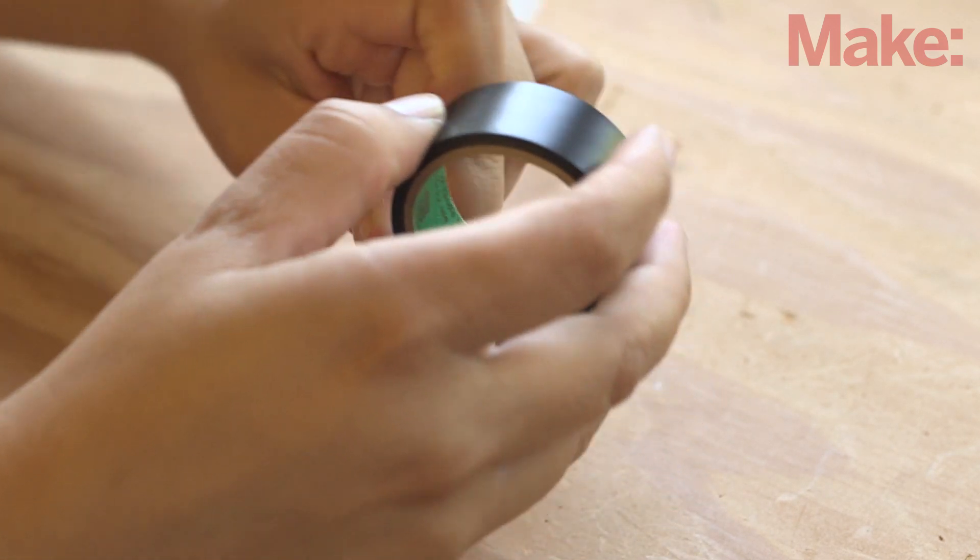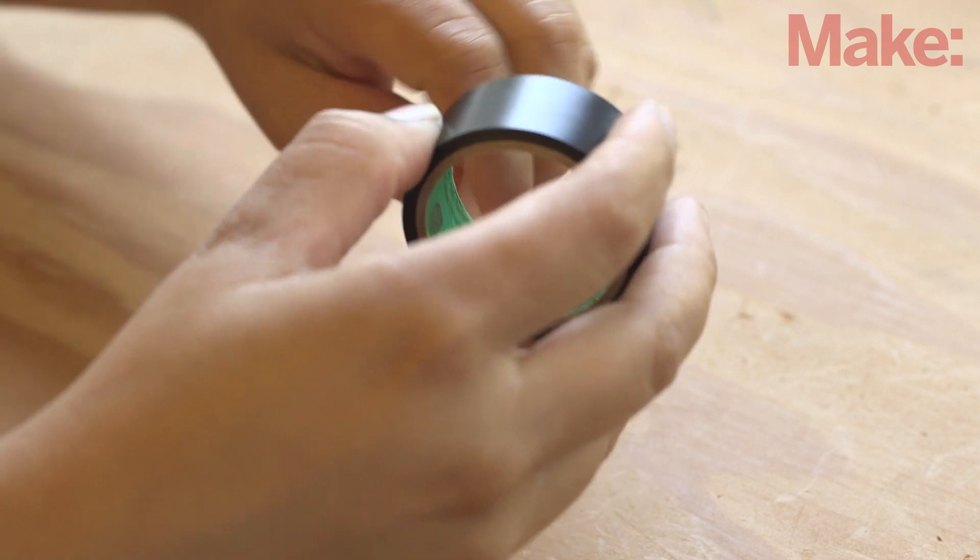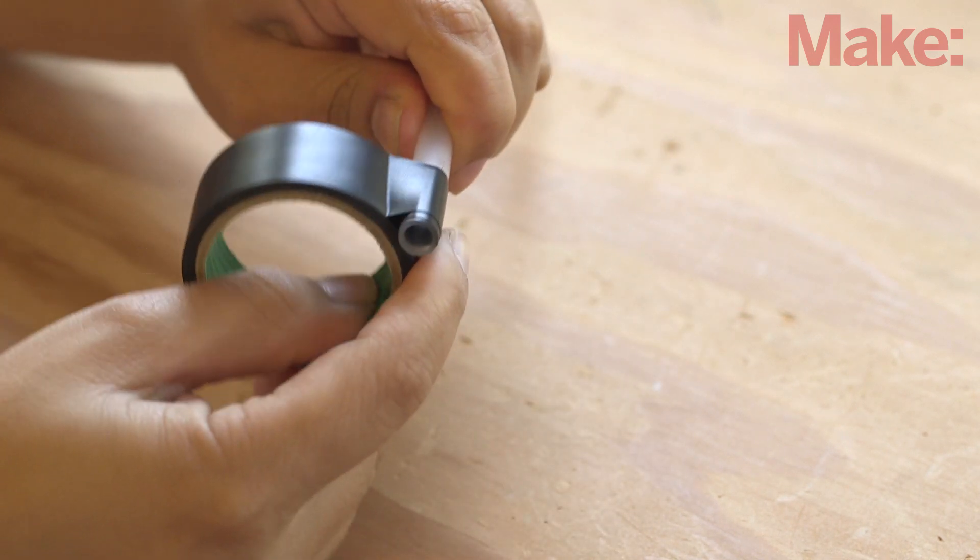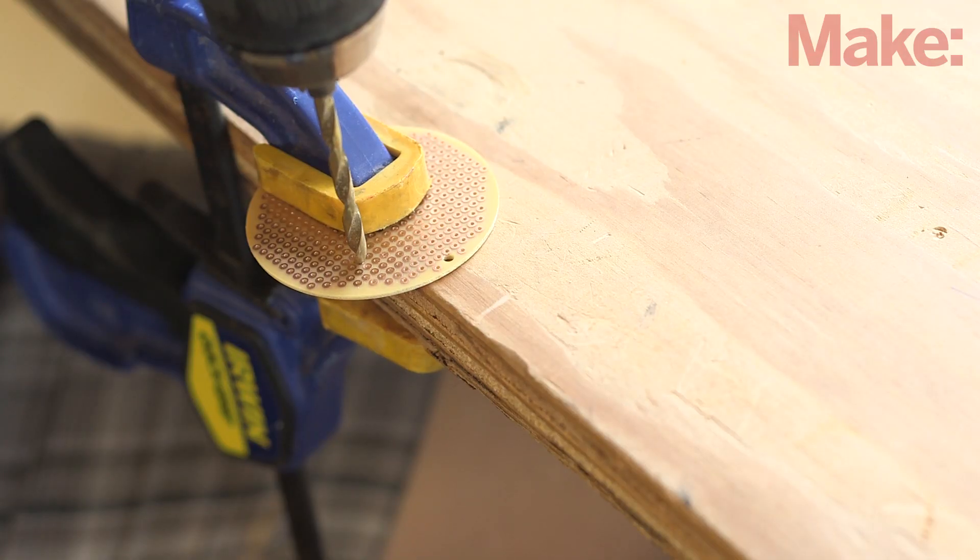Ultimately, you want something that is mostly opaque to block exterior light and that allows the LED to easily traverse the tube. Okay, let's build the LDR synth.